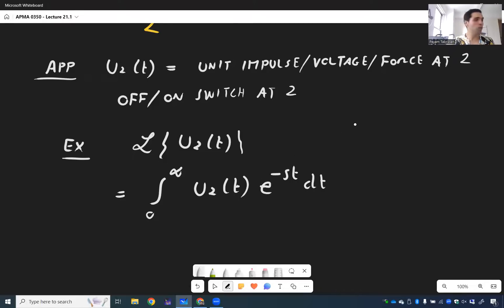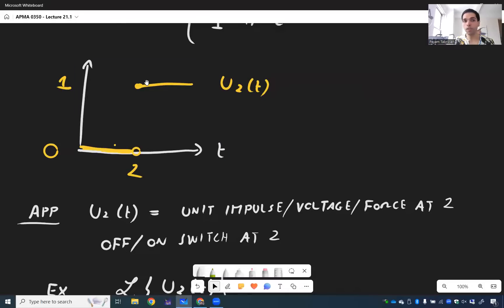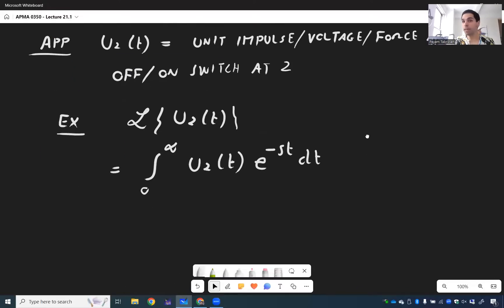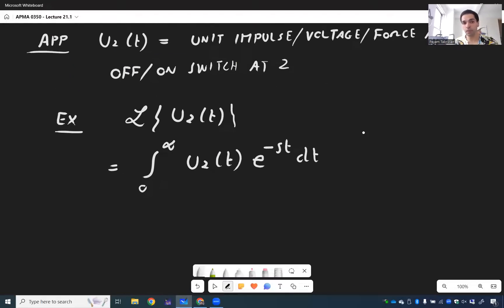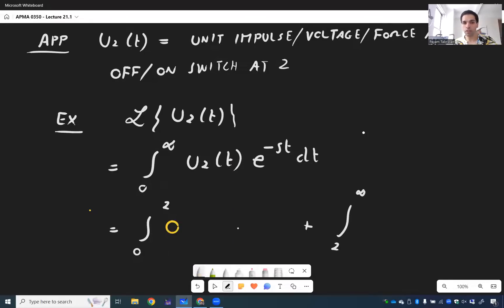And since U2 has a piecewise defined definition, it's zero before two and one after two, it makes sense to split up this integral from zero to two and then two to infinity. But on the interval zero to two, U2 is just zero. So zero E to the minus ST DT.